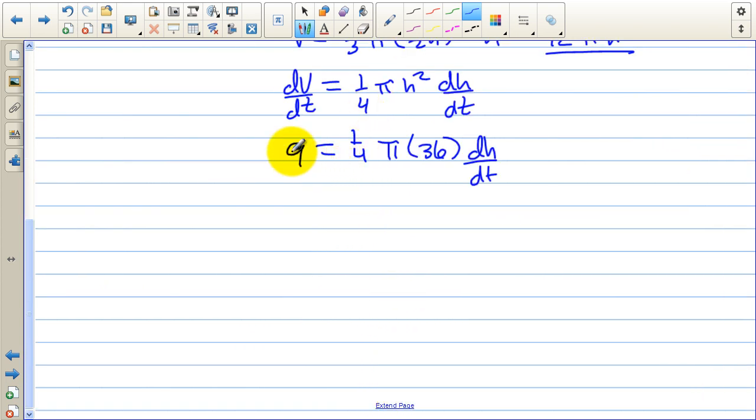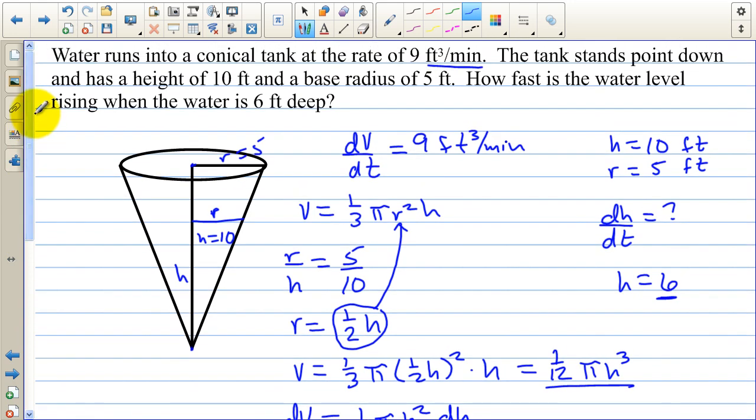I can multiply by 4. That's 36 equals pi times 36 dh dt. And divide by pi and 36. So we end up with dh dt equals 1 over pi. Now if we plug that into the calculator and get a decimal value, I have 1 divided by pi here on my calculator on my desk. And so we have 0.318. And I need some labels for this. That's the rate at which the height is changing and it's going to be feet per minute.